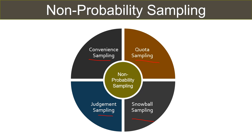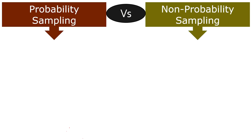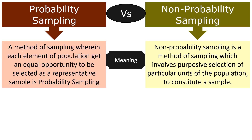Judgment sampling: the researcher uses his own judgment to choose the elements of the sample to represent the population. Talking about the difference between probability sampling and non-probability sampling — probability sampling is a method wherein each element of the population gets an equal opportunity to be selected as a representative sample, whereas non-probability sampling is a method which involves purposive selection of particular units of the population to constitute a sample.